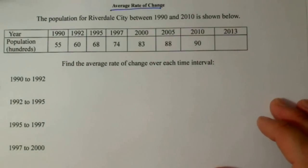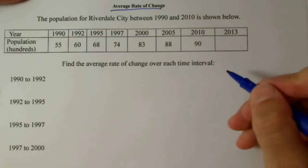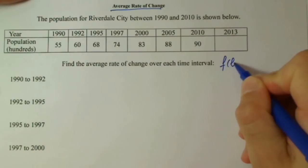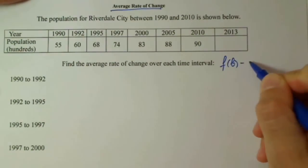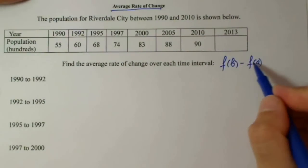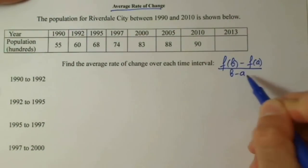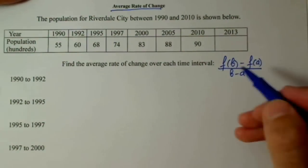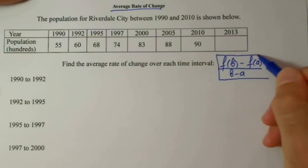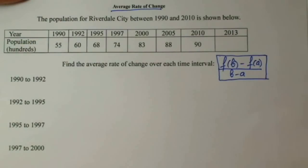What is our average rate of change? First of all, we have to remember the basic formula: f(b) minus f(a), or change in output, over b minus a, change in input. Or you can think of it as delta y over delta x.